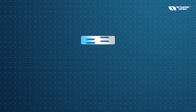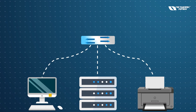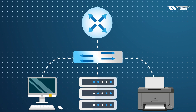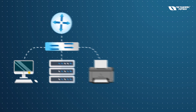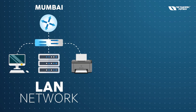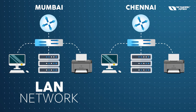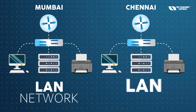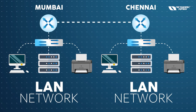We also have a device called a switch, which has ports where we can connect computers, servers, printers, or any type of network device. This switch is connected with your router. So this area — the switch and all devices connected to it — is a LAN network. Chennai also has the same setup: a switch with all computers and servers connected together, which is also a Local Area Network.